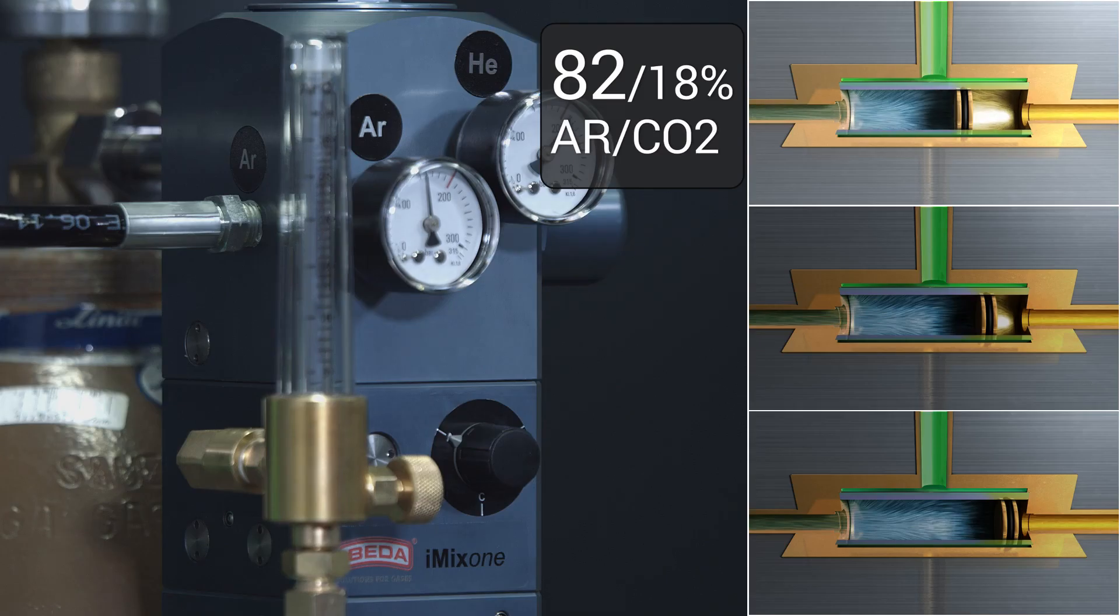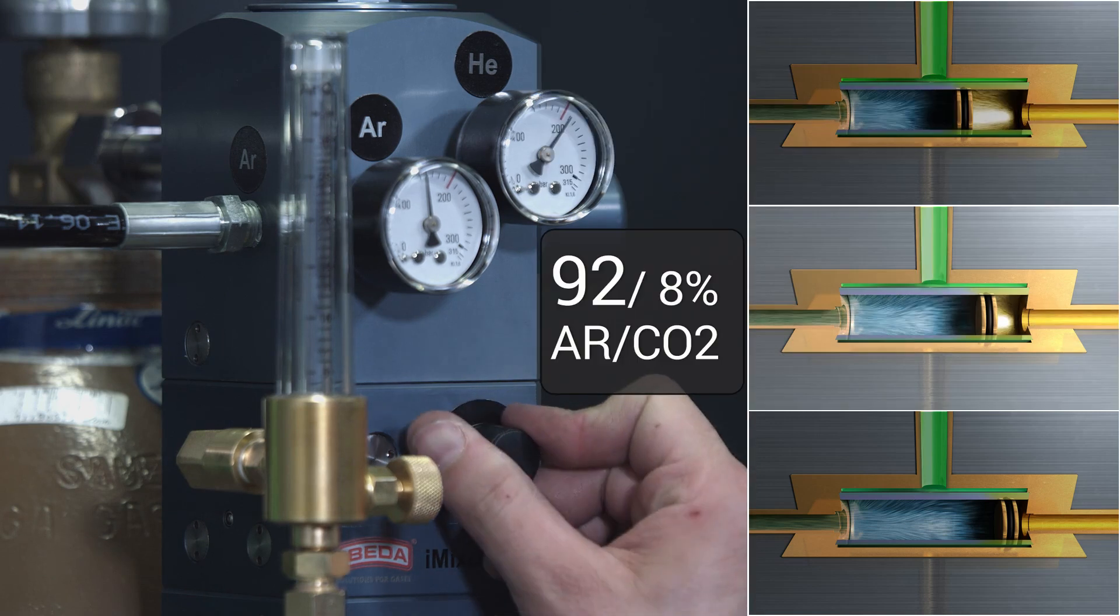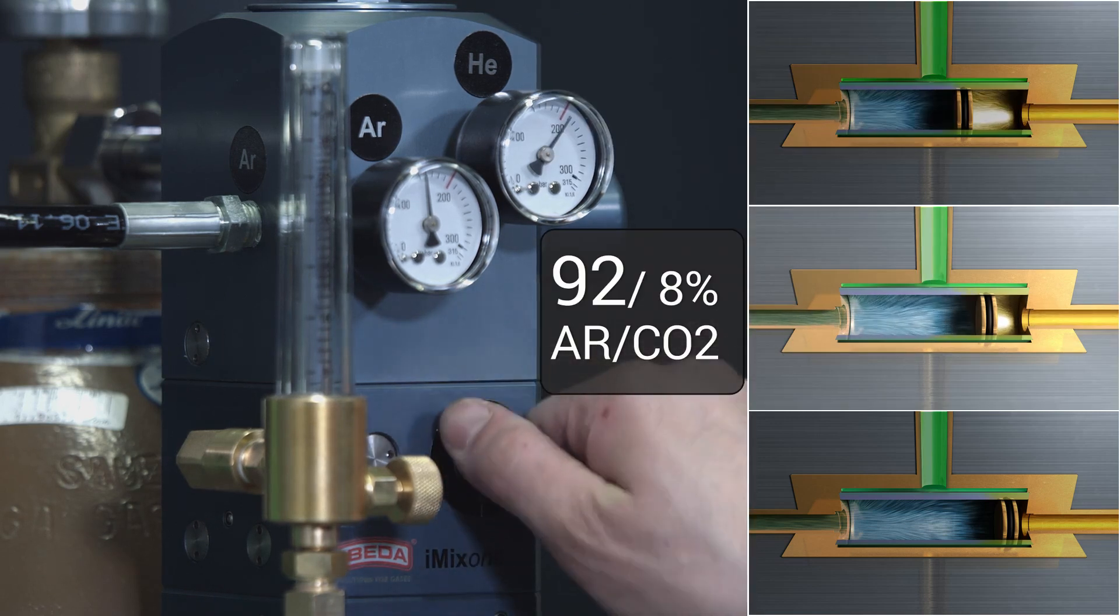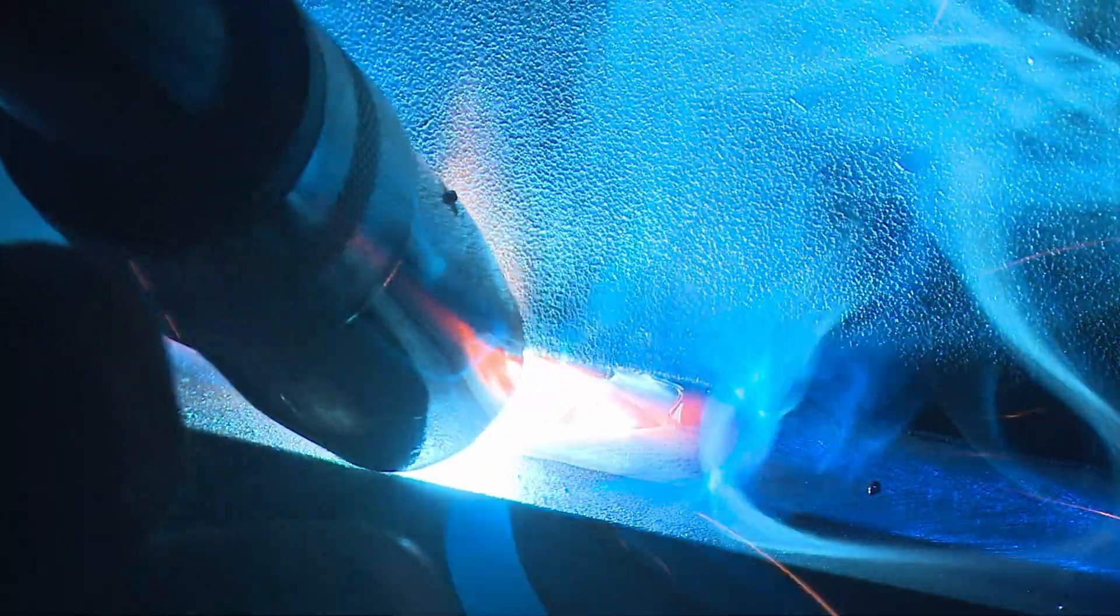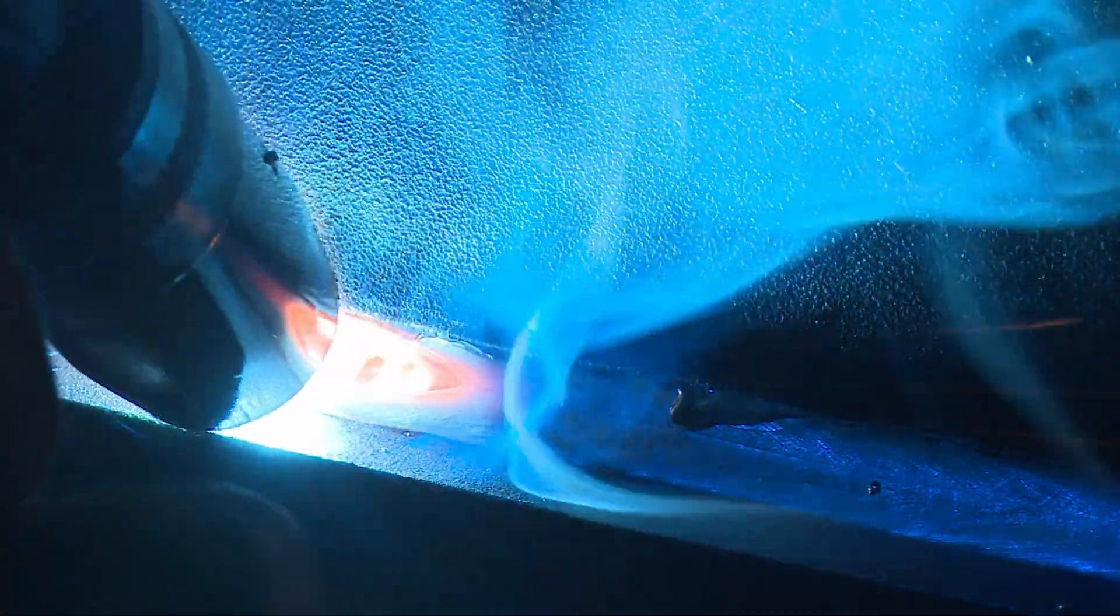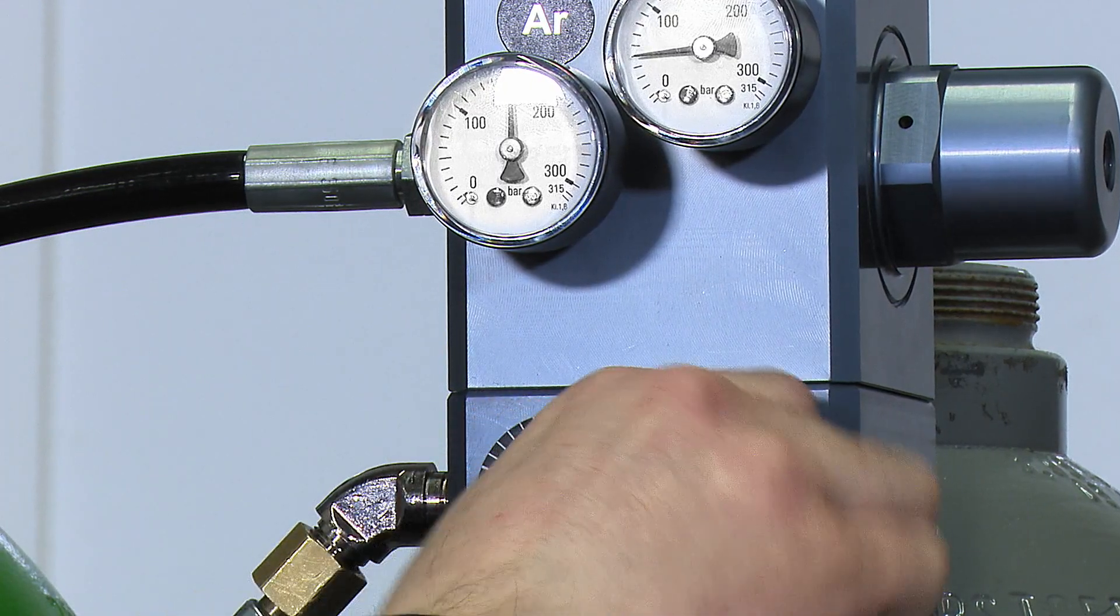iMix 1 by EBITDA. Up to three different gas mixtures, factory preset and calibrated, for quick and easy mixture reproduction. Simply by turning a switch, without the need for pre-mixed cylinder gases.